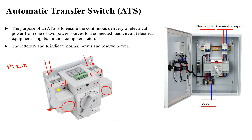For the first source, the line and neutral come through the ATS — line and neutral, depending on the connection. Then the output goes to the load. For the second source, the line is connected to the line and the neutral is connected to the other neutral, so the two sources are arranged in parallel with each other.